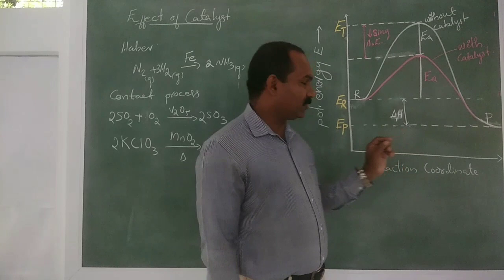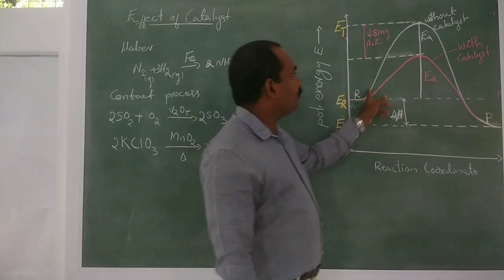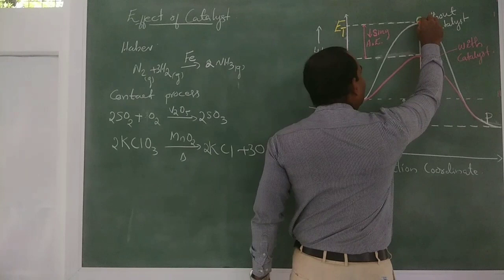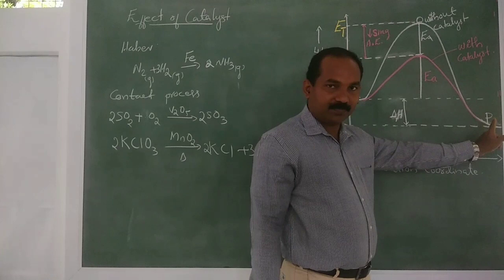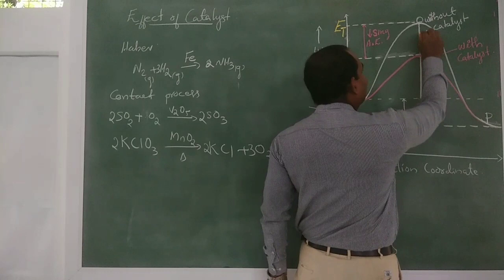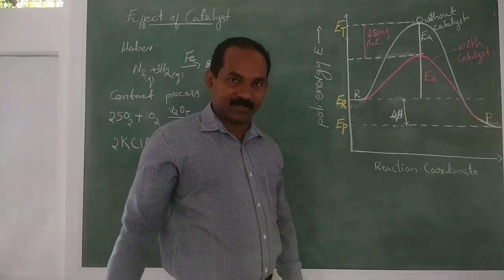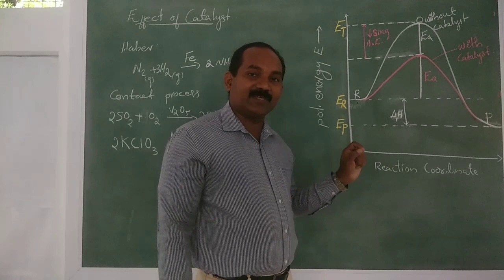Reactants combine to form an activation complex. The peak of the curve is the energy of the activation complex. This activation complex decomposes into products. The energy required to form an activation complex is called activation energy.